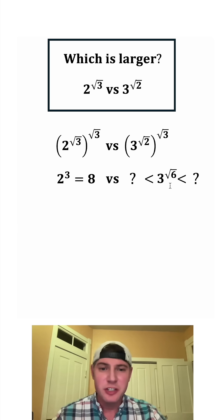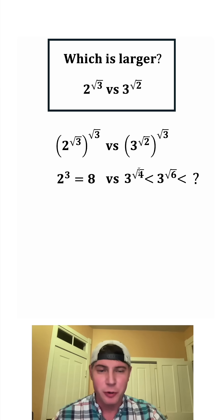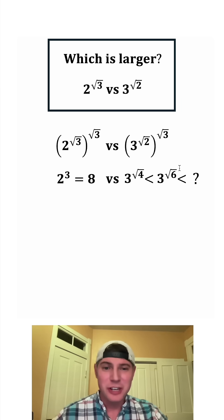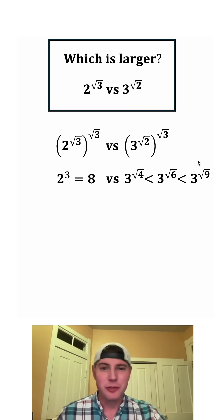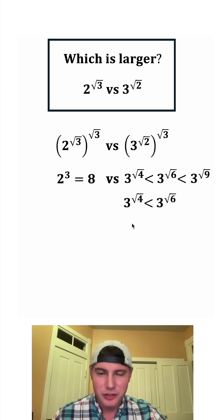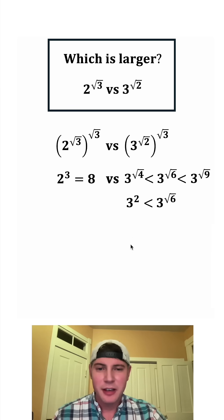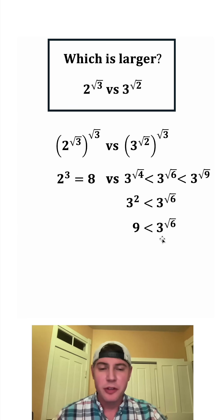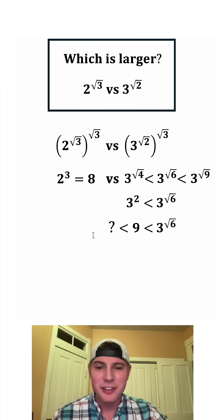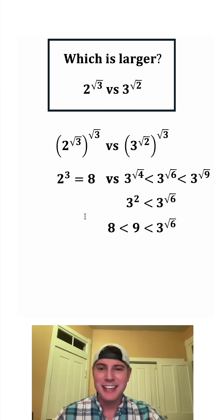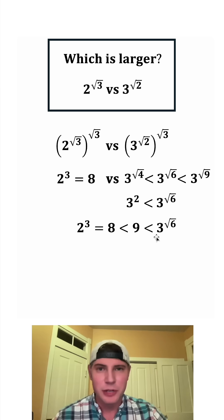No matter what, three to the square root of six has to be greater than three to the square root of four, because square root of six is greater than square root of four. And three to the square root of six has to be less than three to the square root of nine, because square root of nine is greater than square root of six. Square root of four is two, giving us three squared, which equals nine. So three to the square root of six is greater than nine. And nine is greater than eight, which is two cubed. So we know two cubed is less than nine, which is less than three to the square root of six.